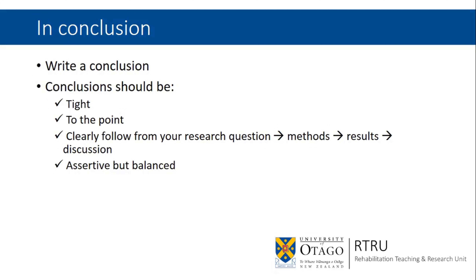Don't introduce any new citations in your conclusion statements. Make sure there's a nice flow of logic from your research question to your methods, to your results, to your discussion, to the things you pull out in your conclusion. Be assertive in your conclusions, but be balanced. That's it from me on writing a discussion section for your PhD thesis, Master's thesis, or journal article. If you want to follow my work on a more ongoing basis, you can follow me on Twitter at DrLevac.